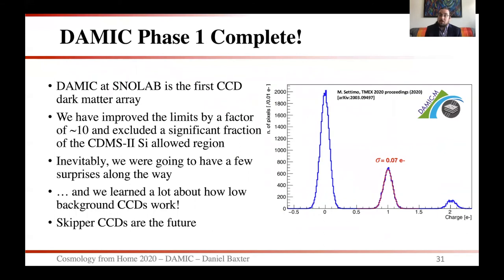The general takeaway is that DAMIC phase one is complete. DAMIC at SNOLAB was the first CCD dark matter array. We have improved limits by a factor of about 10 and excluded a significant fraction of the CDMS2 silicon allowed region. We had a few surprises along the way, and we learned a lot about how low-background CCDs work. The main thing to emphasize is that skipper CCDs are the future — a new readout technique that achieves single-electron resolution and essentially zero threshold data taking.